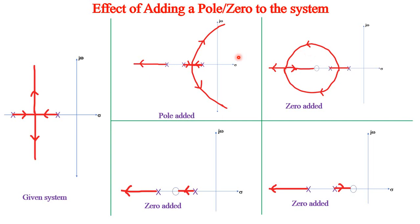Consolidating all these observations: adding a pole to the system causes it to become unstable. Adding a zero to the left improves both transient response and stability. Adding a zero between the poles has a position-dependent effect on transient response and stability. Adding a zero to the right affects both stability and transient response negatively - it slows the response and settling time increases. However, when you add a zero, the system does not become unstable - stability is not affected to the point of instability.